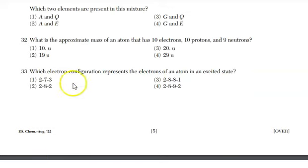Alright, for question 32, you're looking for the mass of an atom. Remember, a mass of an atom comes from protons and neutrons, not the electrons. So 10 plus 9 is 19. And there is our answer, choice two.